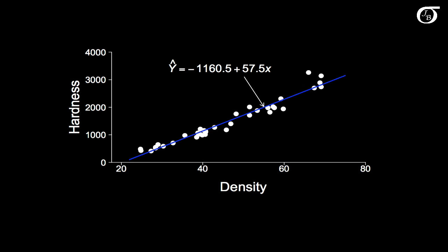And if we wanted to, we could use this line for prediction. So if say we had a density value down here somewhere, let's say it's 65, we might want to predict the Janka hardness for that. In which case we'd simply put 65 into the regression line, and get a predicted value of hardness that falls right on that line.